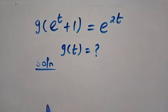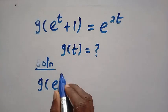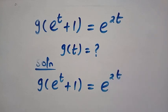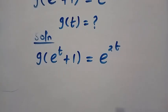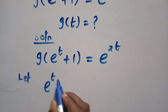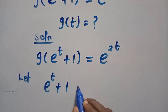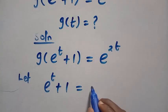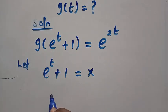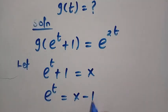When we consider the solution, the equation says g of e^t plus 1 equals e raised to power of 2t. In the first method, if I let e^t plus 1 be equal to, let's say I choose x. I want to make this t the subject of the formula. What I will do is, by subtracting 1 from both sides, we have e^t equals x minus 1.